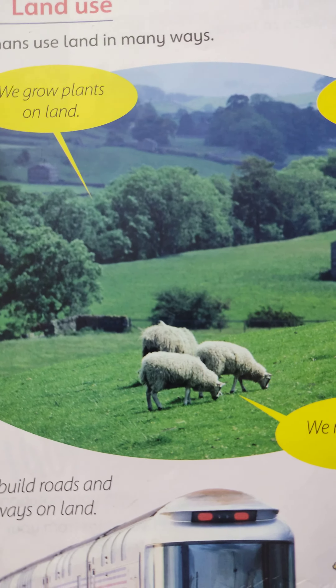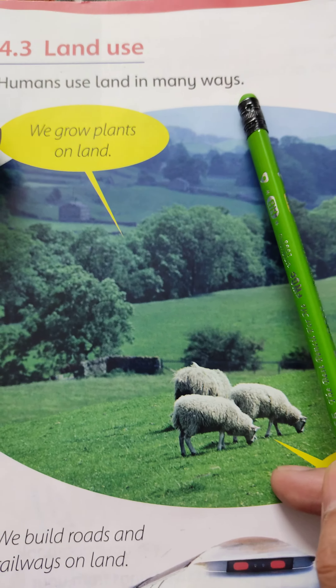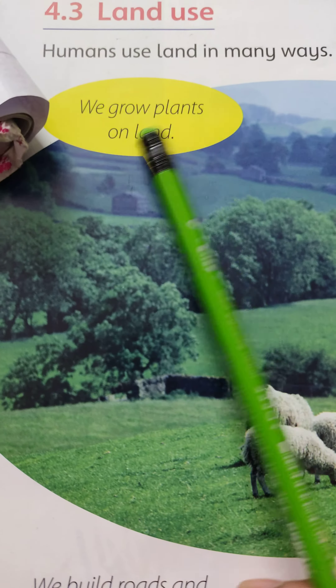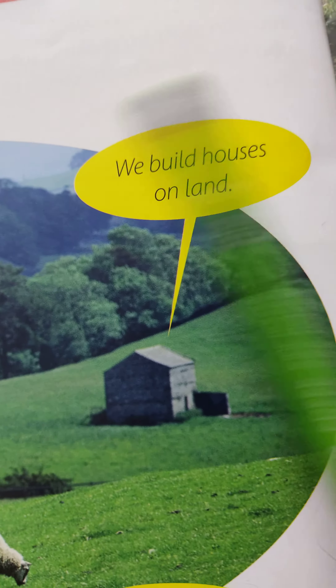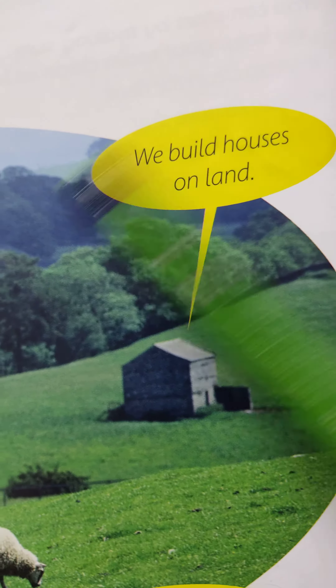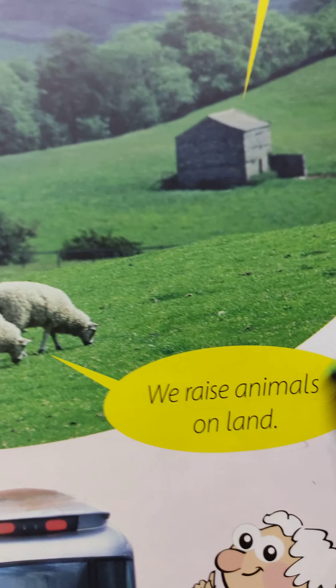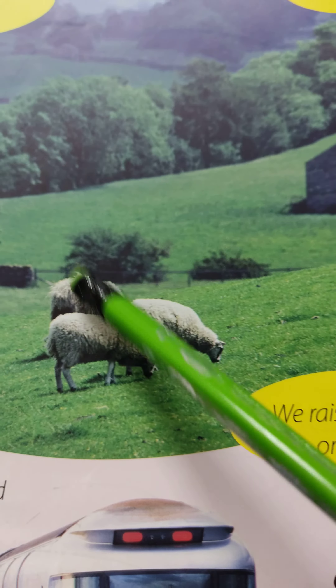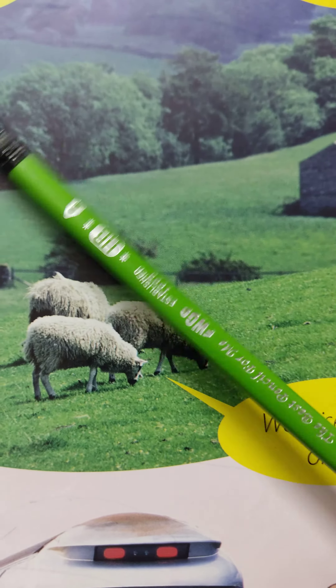Humans use land in many ways. We grow plants on land, we build houses on land, we build roads and railways on land, and we raise animals on land. So humans use land in different ways.